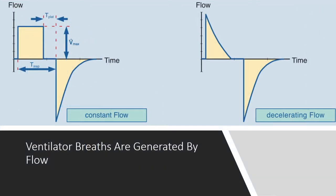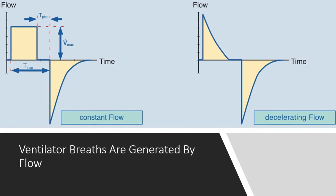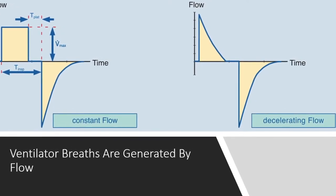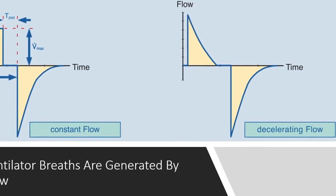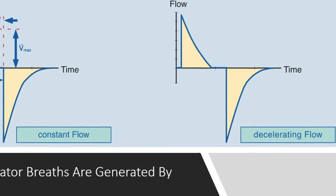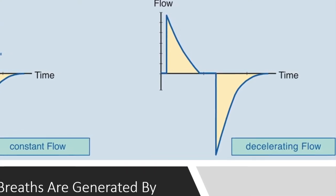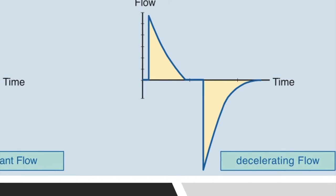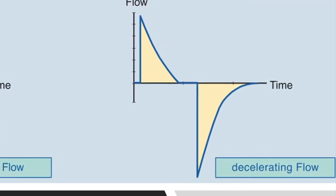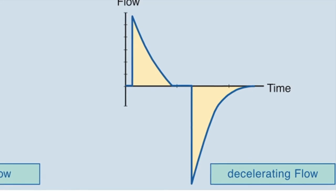This contrasts with pressure ventilation, which produces a decelerating flow. In decelerating flow, you start off with a very high flow rate which then drops over time — a very high flow rate to get you to the preset pressure, then you need less flow to keep it at that preset pressure until flow drops to zero. This is still inspiration, then you cycle into expiration. The advantage of the decelerating flow breath is that for the same mean airway pressure, the peak inspiratory pressure will be lower.